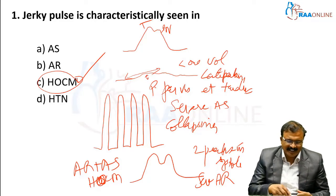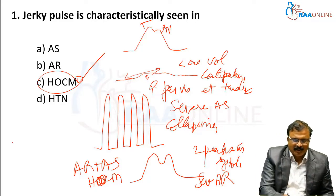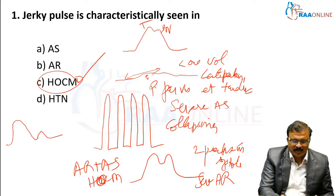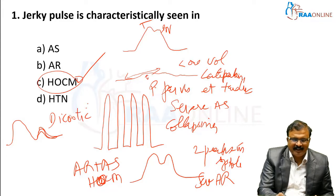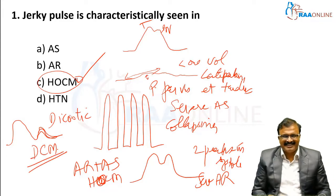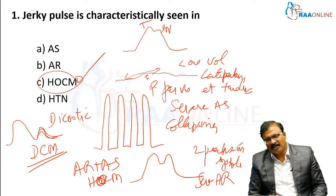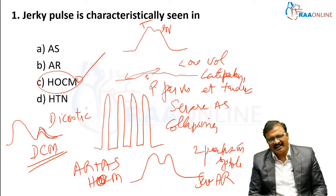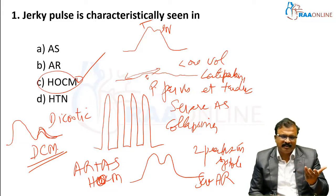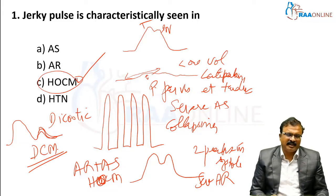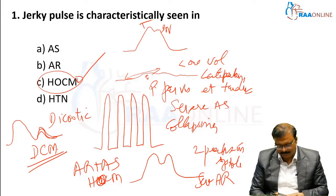One peak in systole and one in diastole is the dicrotic pulse — D for D, it is DCM. You get dicrotic pulse in DCM, septic shock, enteric fever, and other various rare conditions.